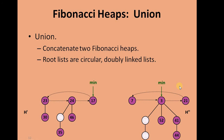In today's lesson we will talk about the union of the Fibonacci Heap. The union operation in the Fibonacci Heap majorly needs two steps. Step one: we concatenate two Fibonacci Heaps. Since root lists are circular doubly linked lists, they are easily added to each other and the min pointer is adjusted.